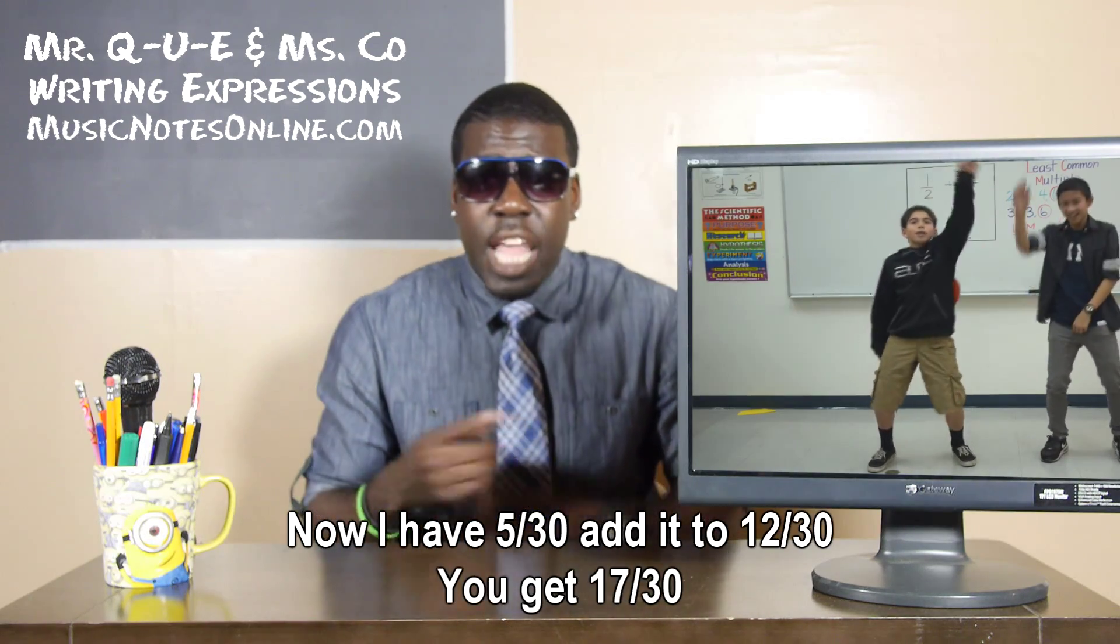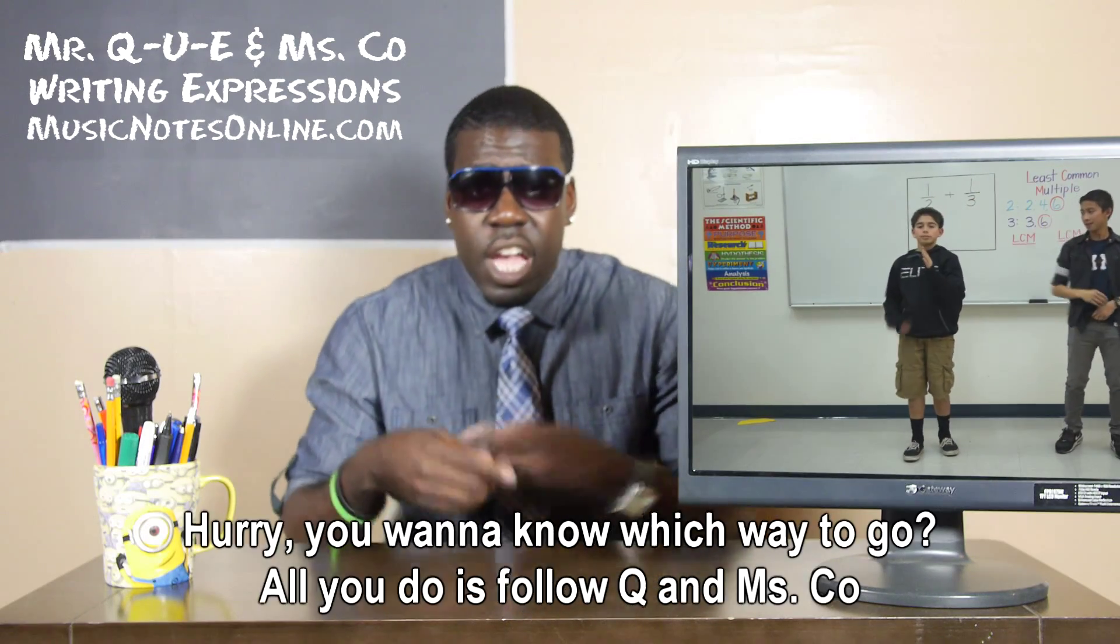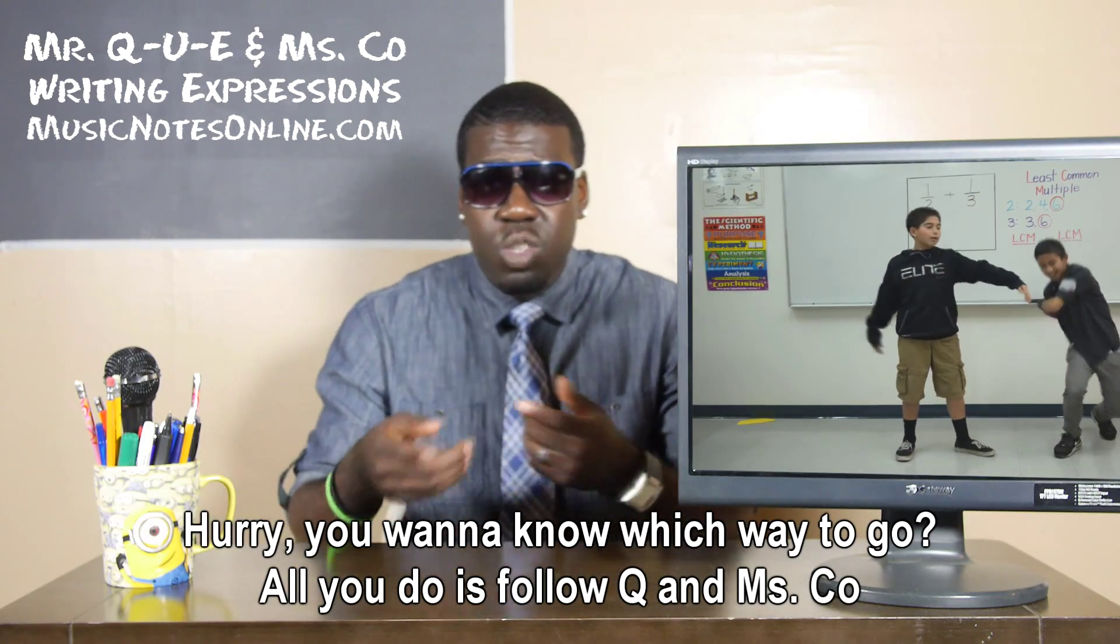Numerator is twelve. Now I have five over thirty. Add it to twelve over thirty. You get seventeen over thirty. You want to know which way to go? All you do is follow Q and Ms. Co.